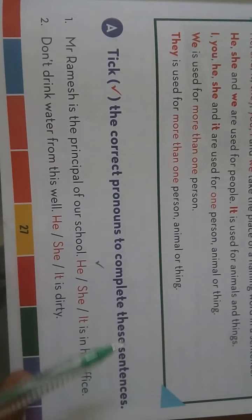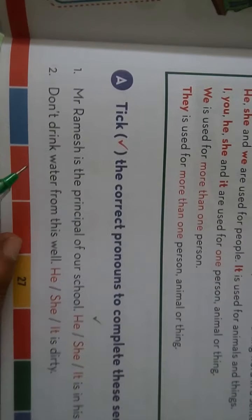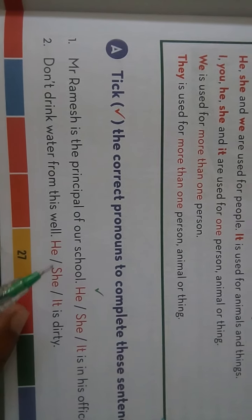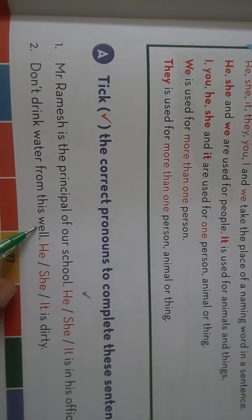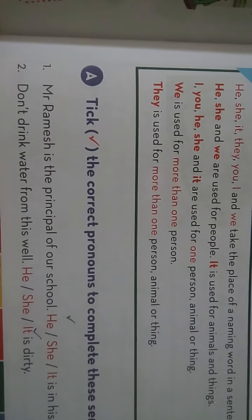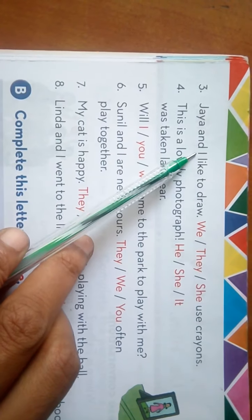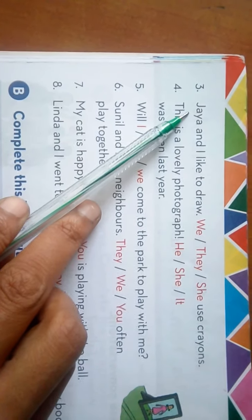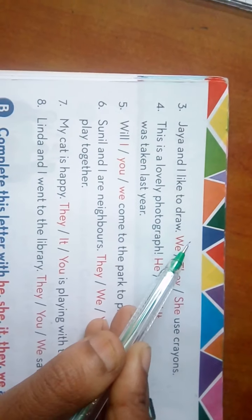Now take the correct pronouns to complete these sentences. Number one is already done. Number two: 'Don't drink water from the well. ___ is dirty.' Well — kuan — is a non-living thing and singular noun, so we write 'it'. It is dirty. Number three: 'Jaya and I like to draw. ___ use crayons.' I ke saath Jaya hai, so when I includes another subject, we write 'we'. We use crayons. Number four: 'This is a lovely photograph. ___ was taken last year.' Photograph is non-living thing and singular noun, so we write 'it'. It was taken last year.